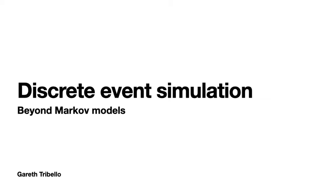Hello. The programs for simulating MM1 queues that we have been writing for the last couple of weeks are an example of code that can be used to run what is called a discrete event simulation. In this video I'm going to use what you know about MM1 queues to start getting you thinking about how we can simulate more complicated queues. I also hope that if you understand why a simulation of a queue is a discrete event simulation, it will help you when you encounter other types of discrete event simulation.